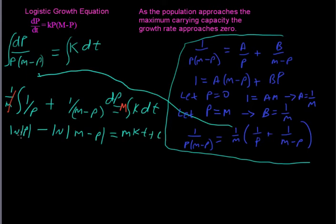All right, so we can take these logarithms right here and put them together using the log rules. And we'll end up with ln of absolute value of p over m minus p equals m kt plus c.